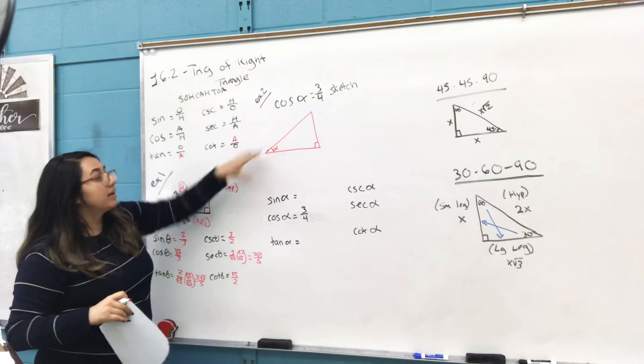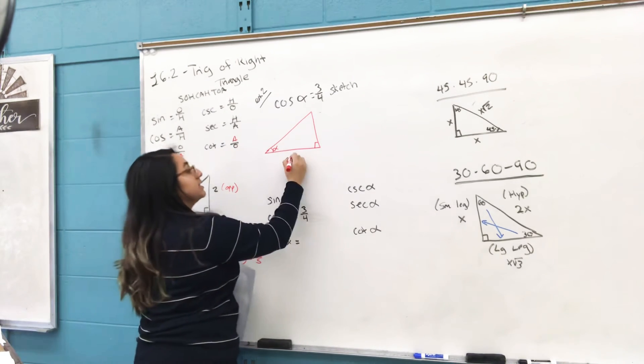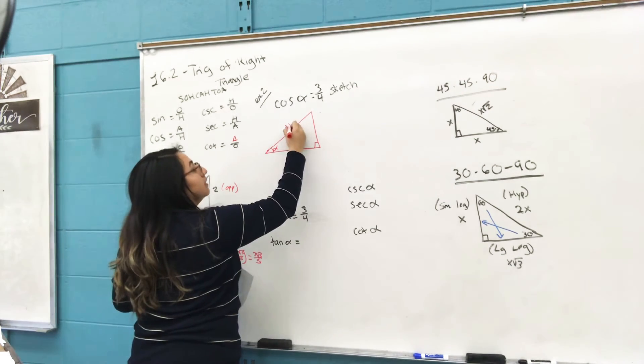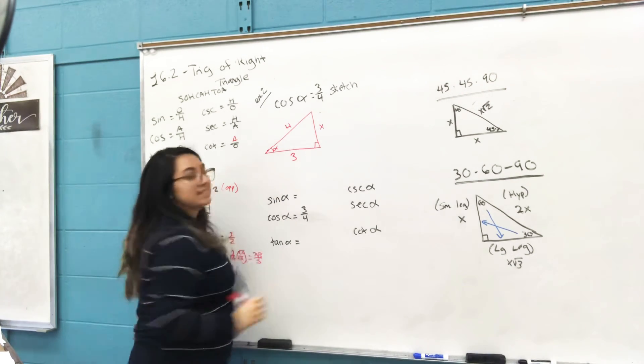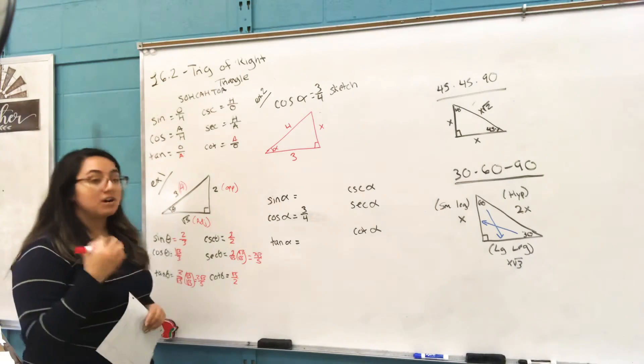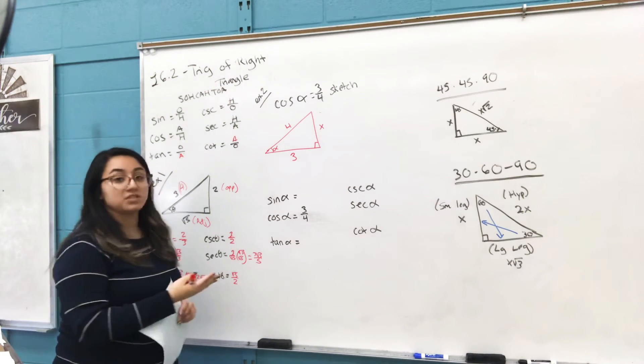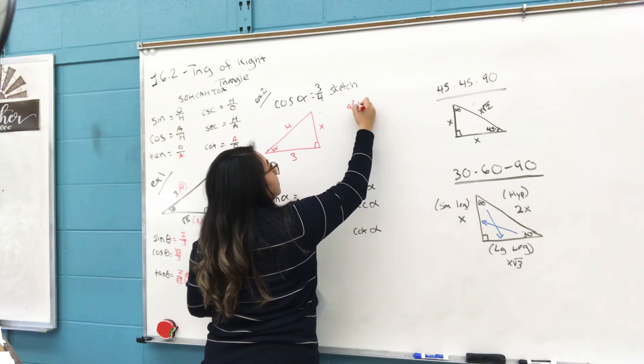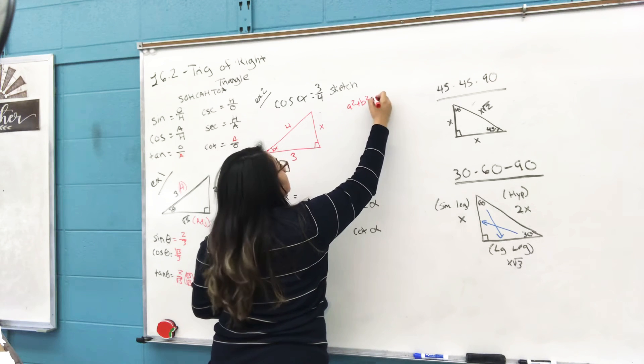So if I draw my triangle out, the adjacent side would be 3, the hypotenuse now is 4. All I need to find is that measurement right there, because you need all three sides to find all your six trig functions.